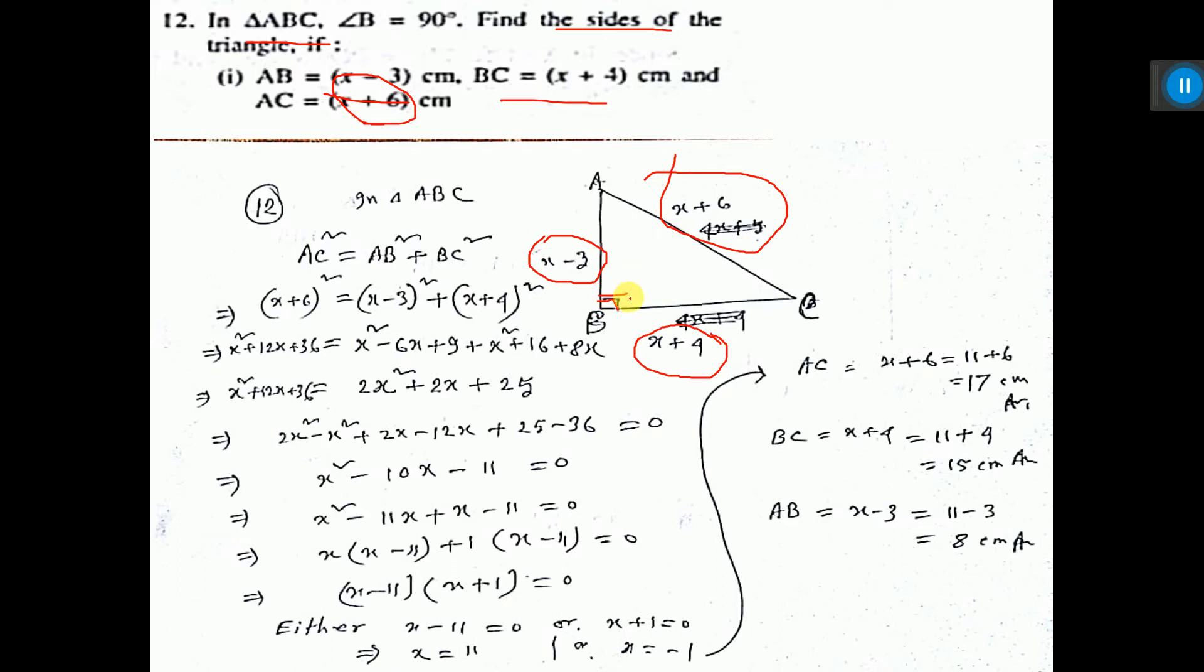Now since this is 90 degrees, this is the hypotenuse. So if you apply Pythagoras theorem, then AC squared equals AB squared plus BC squared. Now put the value of AC, AB and BC.